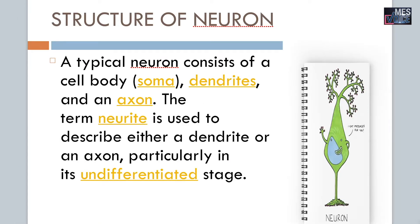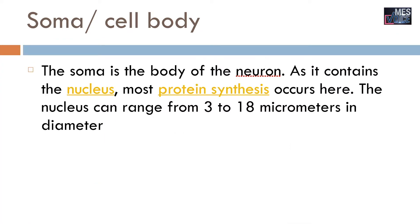A typical neuron consists of a cell body, otherwise known as soma, dendrites, and axons. The term neurites is used to describe either a dendrite or an axon, particularly in its undifferentiated stage during the prenatal phase. The soma is the body of the neuron as it contains the nucleus; most protein synthesis occurs here. The nucleus can range from 3 to 18 micrometers in diameter, and this is the place where neurotransmitters are produced and later carried to the axon terminals.